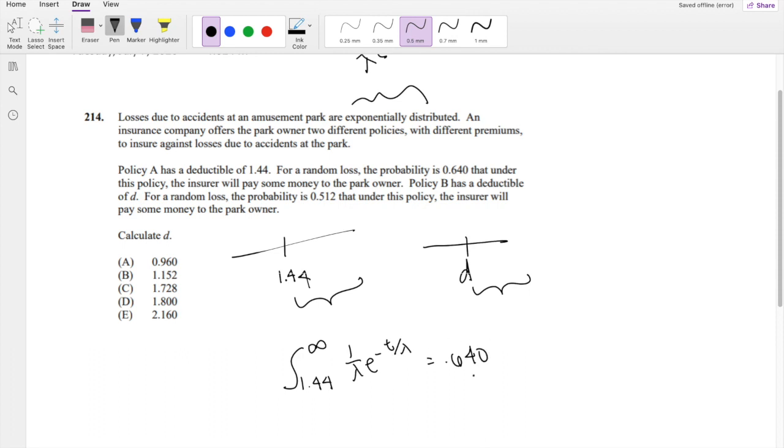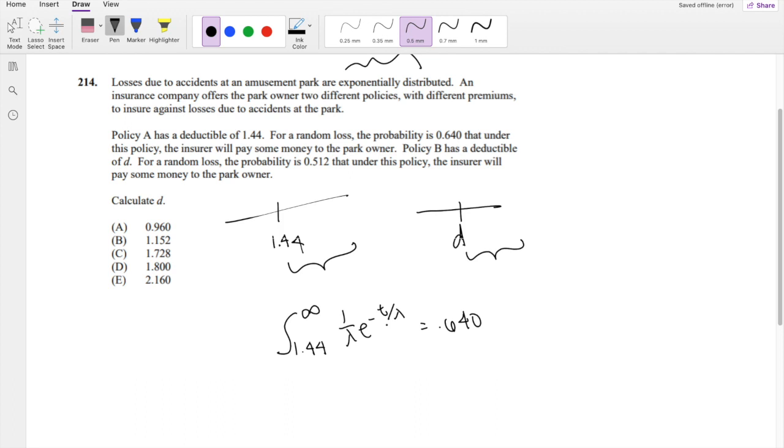Then we can actually find the lambda. So when you take the derivative of this, this just becomes negative e to the negative t over lambda, evaluated from 1.44 to infinity.